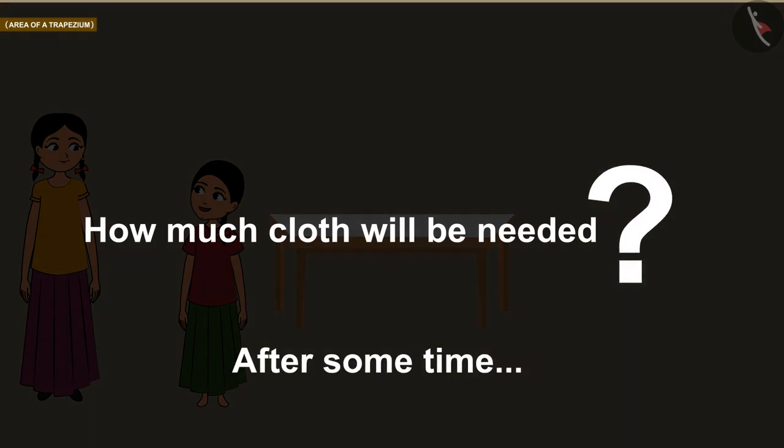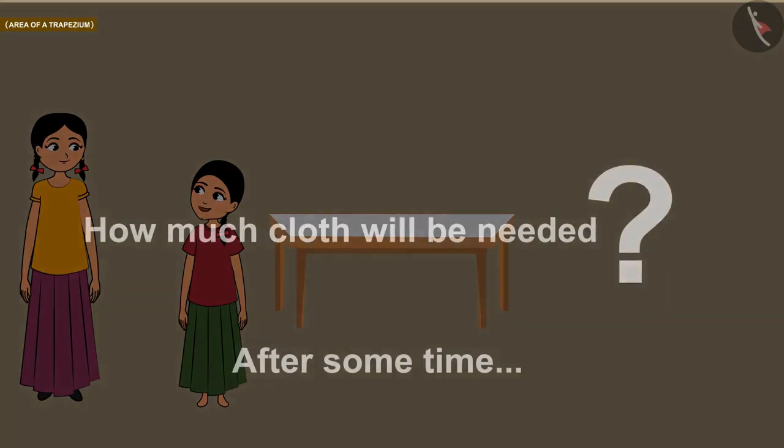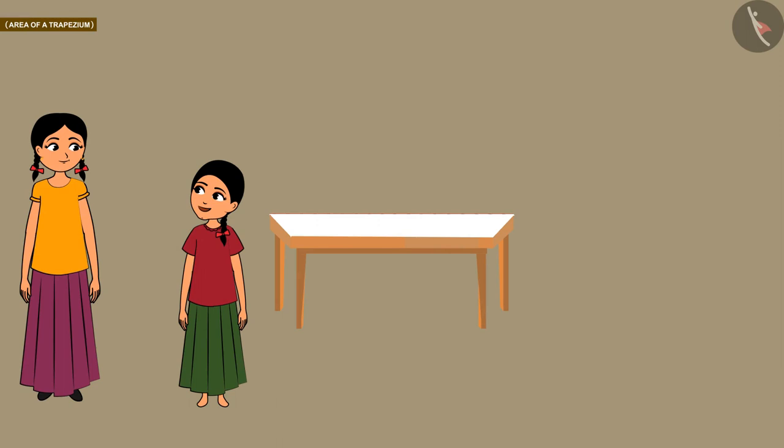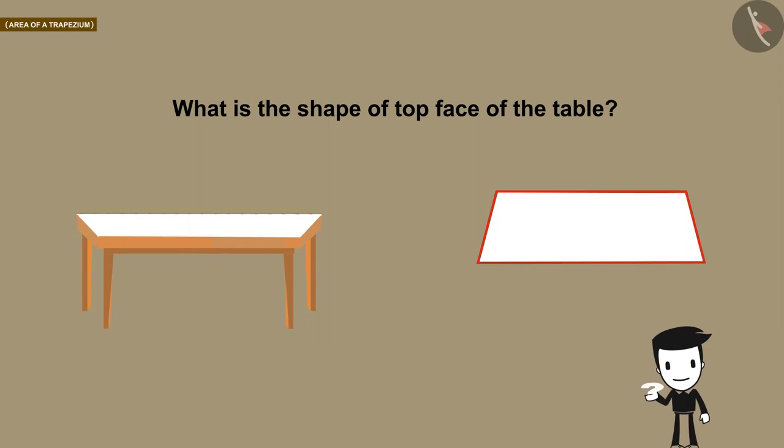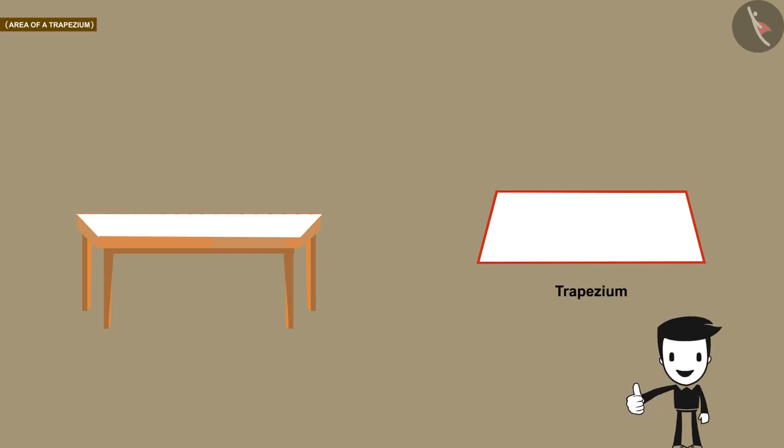Let's see what Kritika did. First of all, Kritika observed the shape of the table. Can you tell? Well done, this is a trapezium. She knows that she has to find the area of the table to find out the measurements of the cloth required.